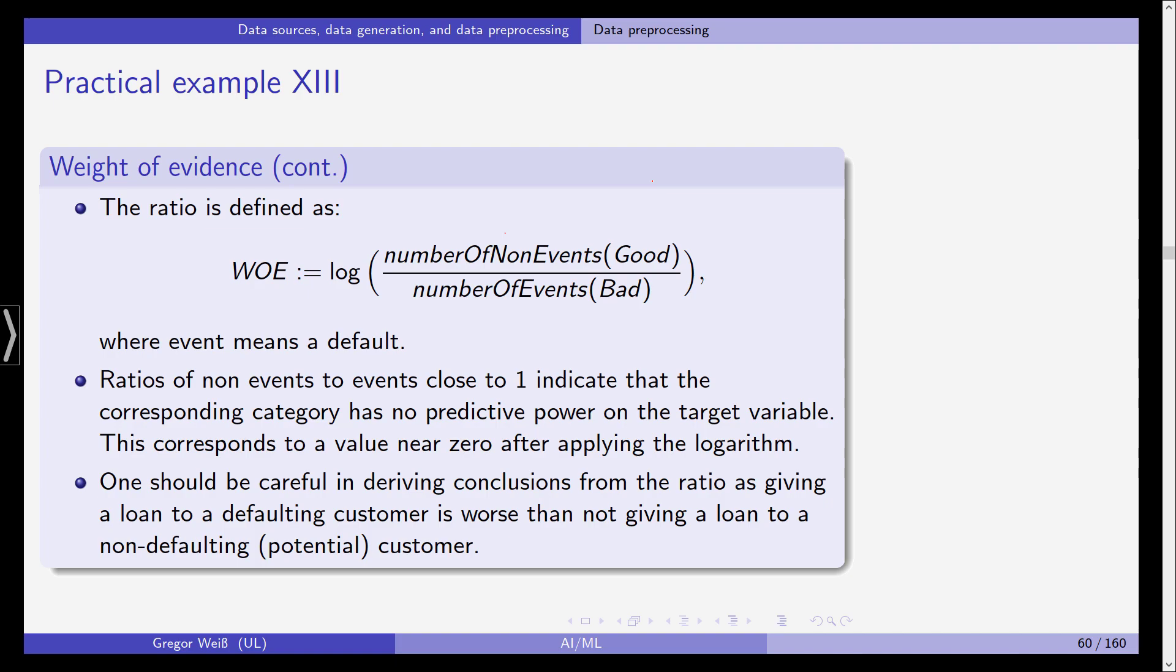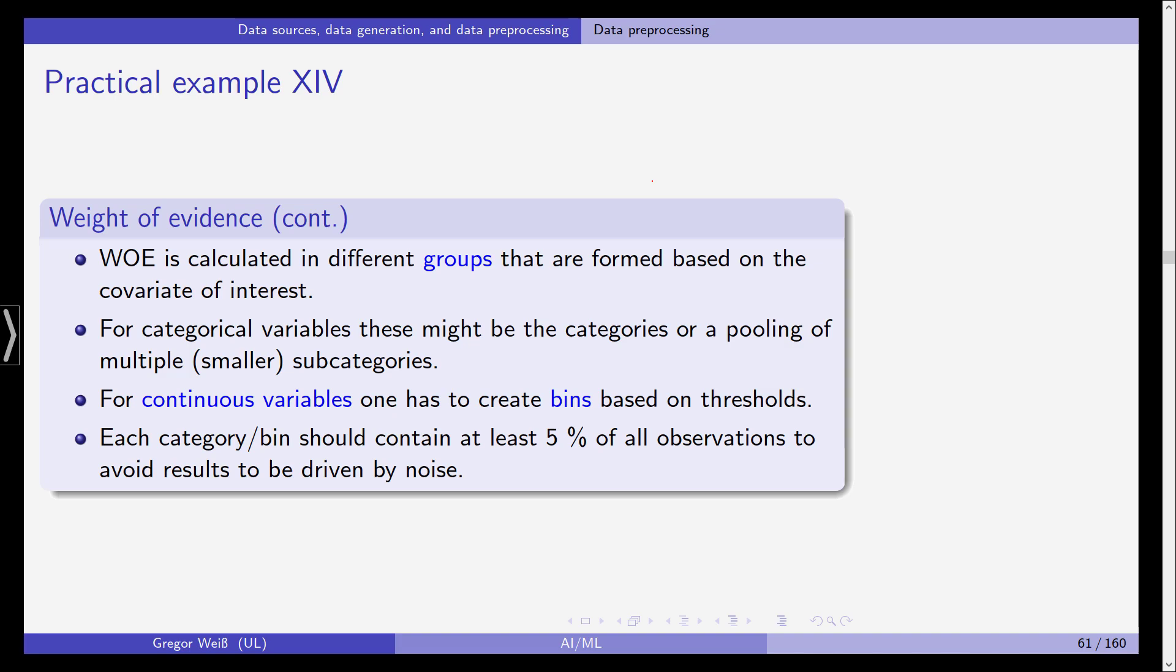And one should be careful in deriving conclusions from the ratio as giving a loan to a defaulting customer is worse than not giving a loan to a non-defaulting potential customer. So this is still a purely data-driven approach to get a first glimpse of the predictive power of some of our covariates apart from being completely void of any economic theory. But again it gives us a first impression, a first hint of what the data looks like.